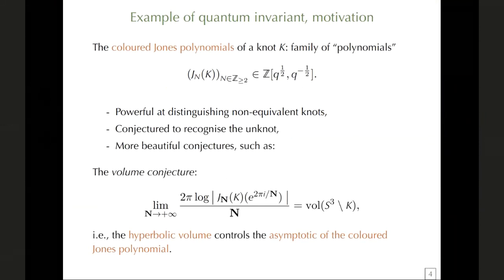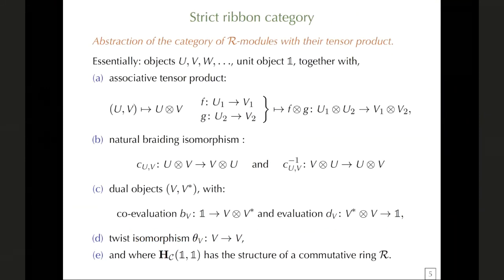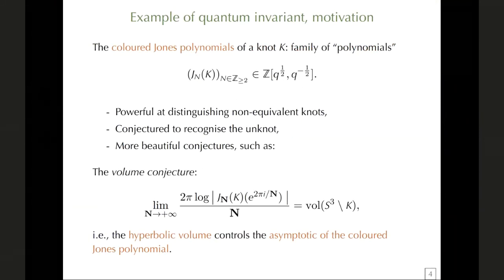The volume conjecture has been checked for certain families of knots where we understand the hyperbolic structure well from triangulations, and where we can also find closed forms for the Jones polynomials. But it remains a very challenging task to prove in general.